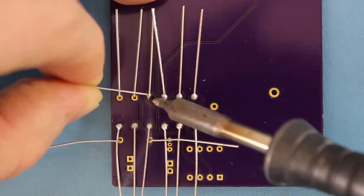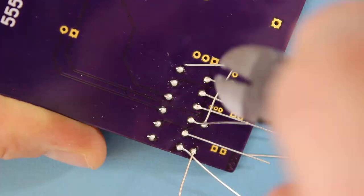Use a set of clippers to cut the excess leads. Make sure you don't cut into the solder joint.